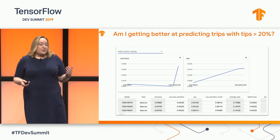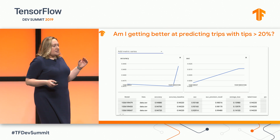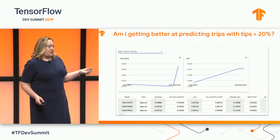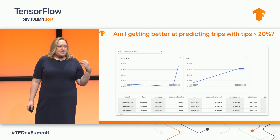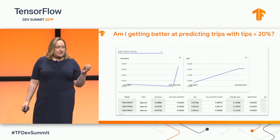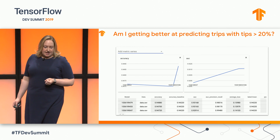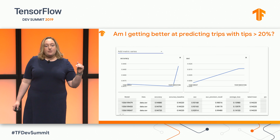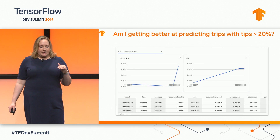You also want to know if you can get better at predicting trips over time. You are continuously training these models on new data and you're hoping that you get better. The TensorFlow Model Analysis tool that powers the evaluator in TFX can show you the trends of your metrics over time. Here you see three different models and the performance over each with accuracy and AUC.